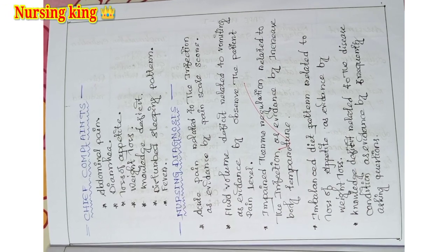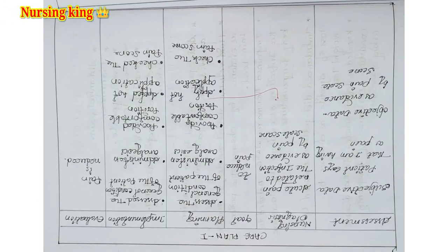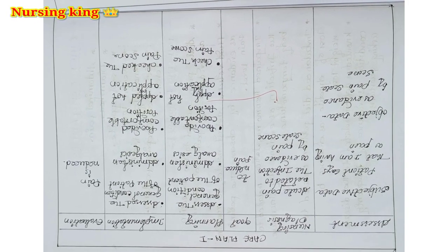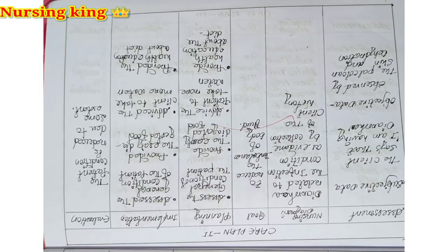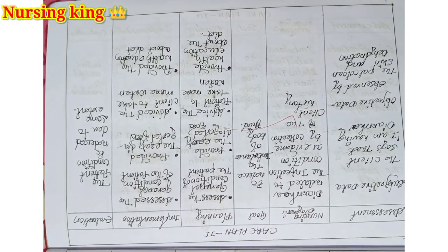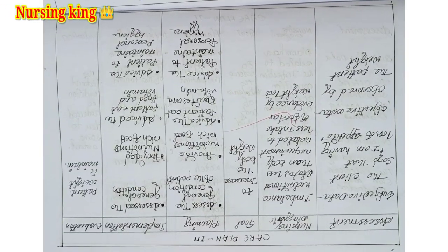According to the chief complaint, you have to write the nursing diagnosis. And according to the nursing diagnosis, each nursing diagnosis, you have to write one nursing care plan. And that care plan includes assessment, diagnosis, goal, planning, implementation, and evaluation.